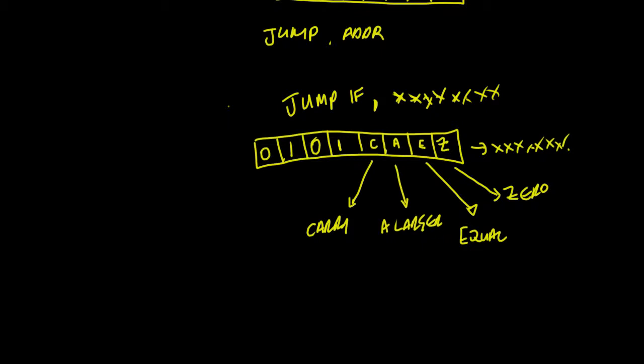In this video we're going to go through the Jump If instruction — this is the last jump instruction. The way it works is we will jump to the next address, so that's the contents of the next address. It's similar to the previous instruction we've seen. There are two bytes: the first byte is the instruction and the next byte is the address we will go to.